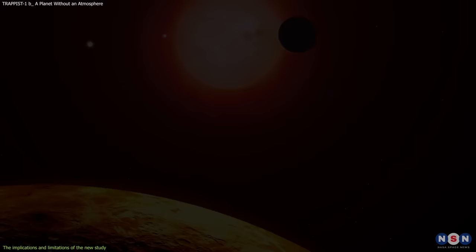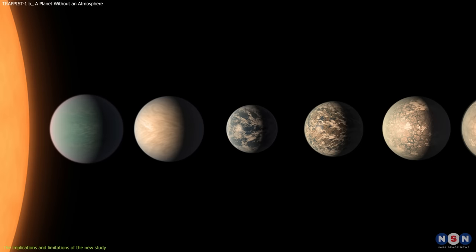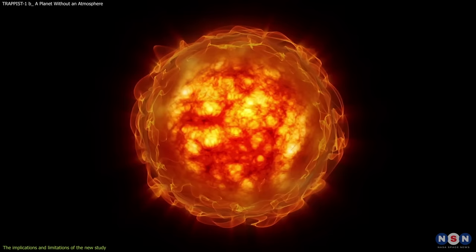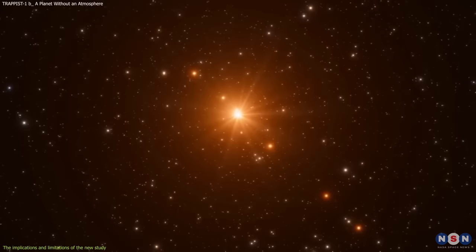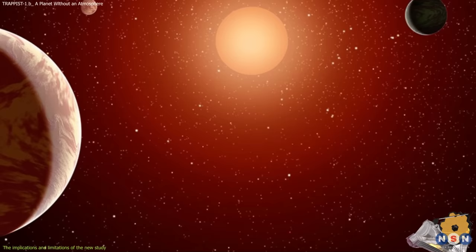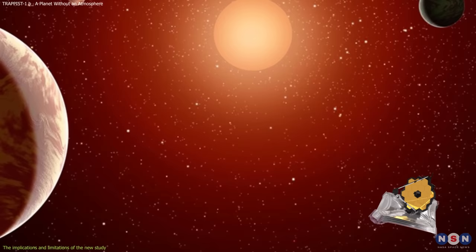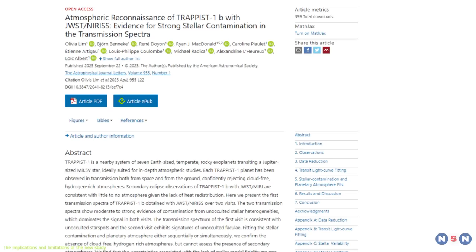The implications and limitations of the new study are both significant and challenging for our understanding of exoplanets around low-mass stars. It shows that not all planets in the TRAPPIST-1 system are alike and that their atmospheres depend on their distance from their stars. It also shows that low-mass stars can have a strong influence on the observations of their planets and that their activity can create noise and variability in the data. These findings are also important for understanding the diversity and evolution of exoplanets around low-mass stars, which are very common in the galaxy. They also demonstrate the potential and promise of using Webb to explore these distant worlds and answer fundamental questions about life in the universe.